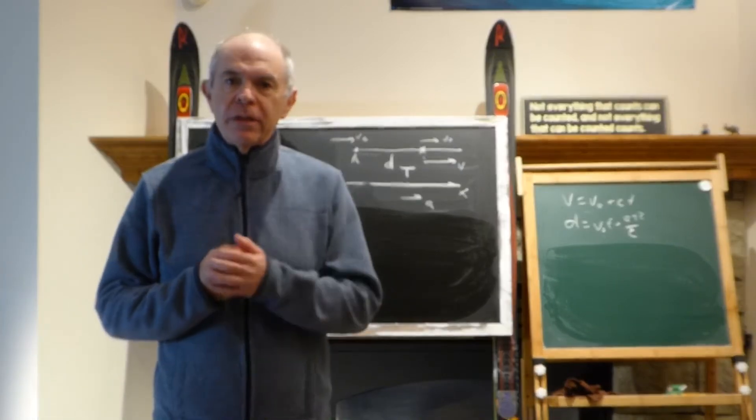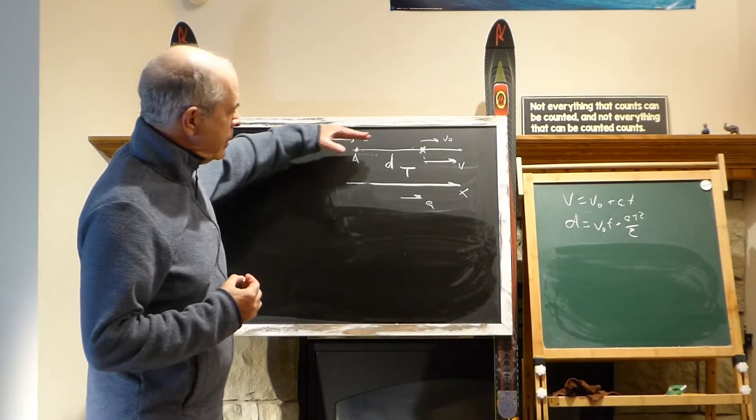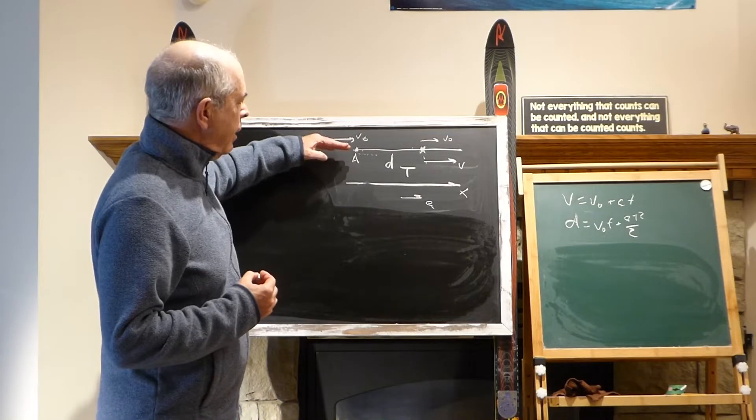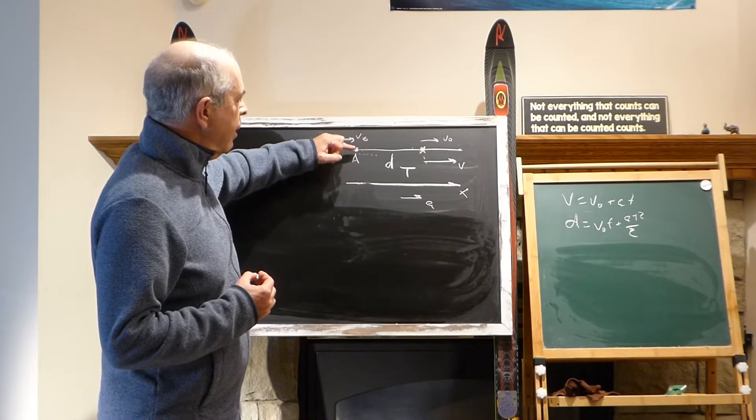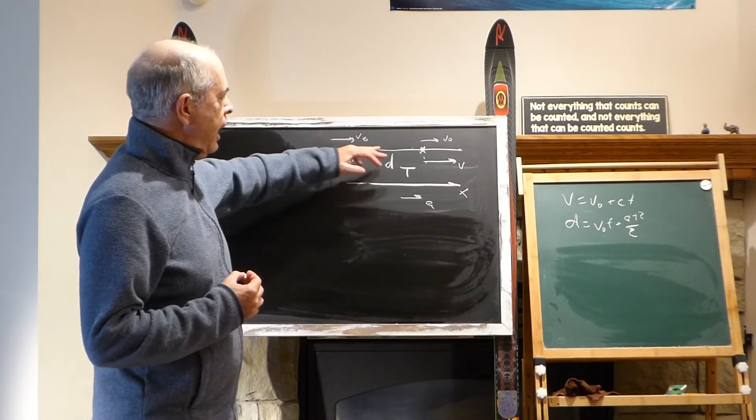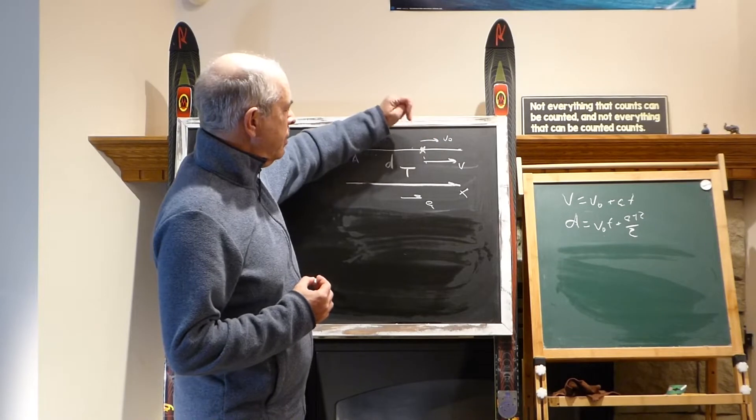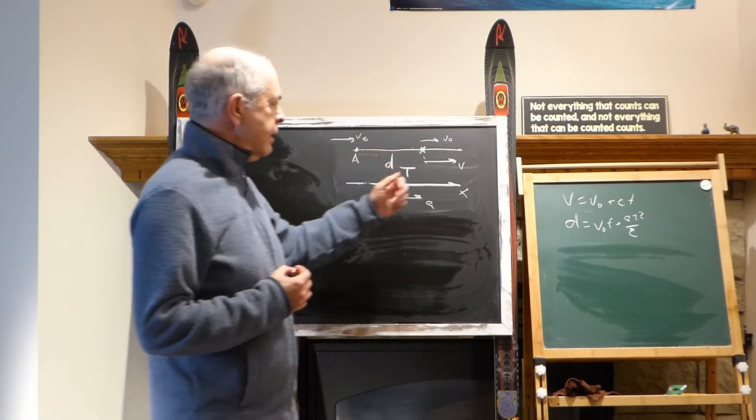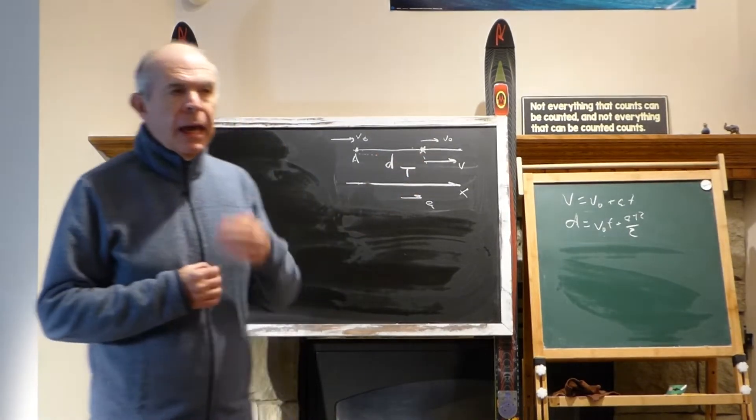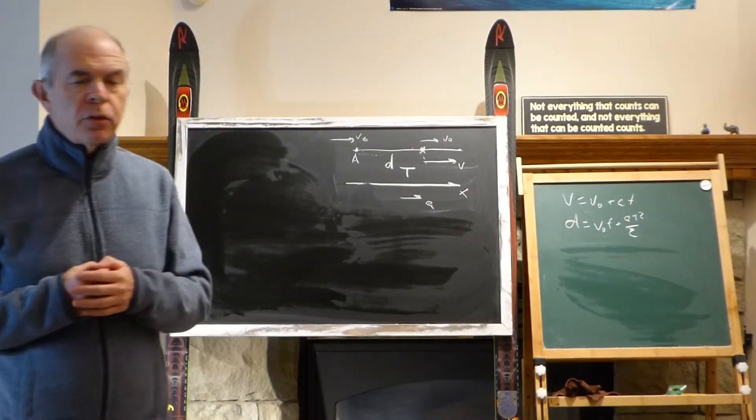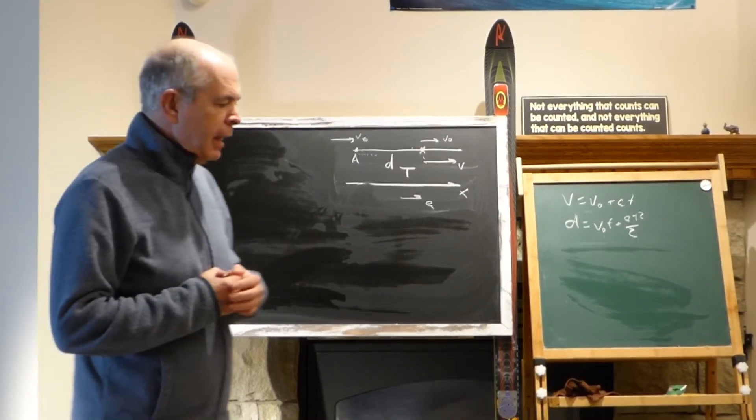This is part three of the same problem about the bicycle that moves with a constant speed v0 and the car that starts simultaneously at point A, moving with constant acceleration. At certain points they meet, the car catches up to the bicycle. They're asking us about what would be the speed of the car. In the first part we determined that the speed will be double the speed of the bicycle.